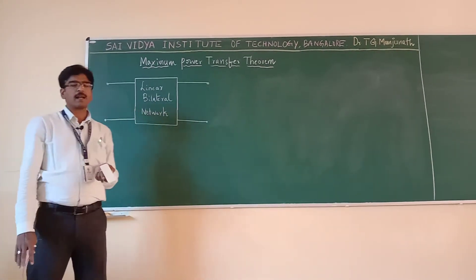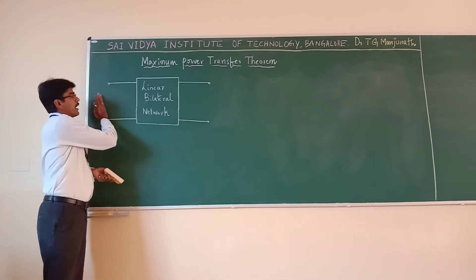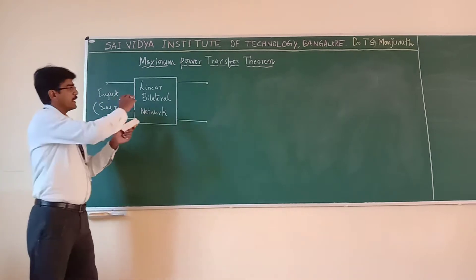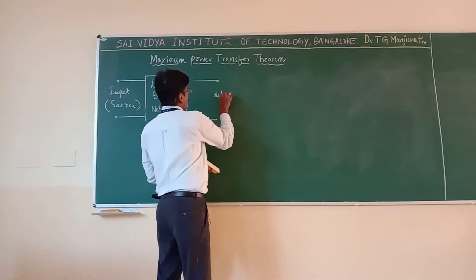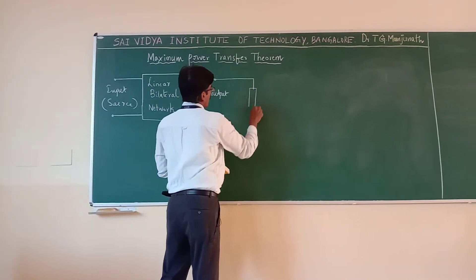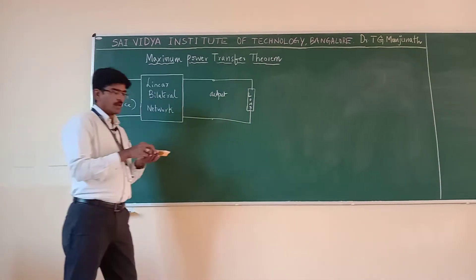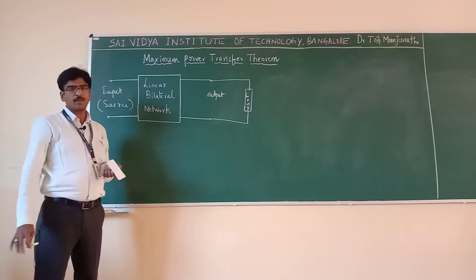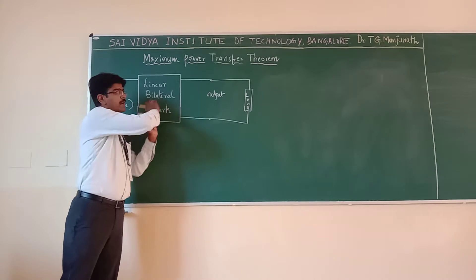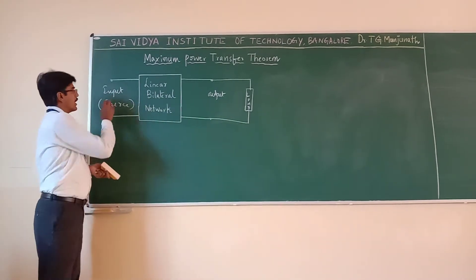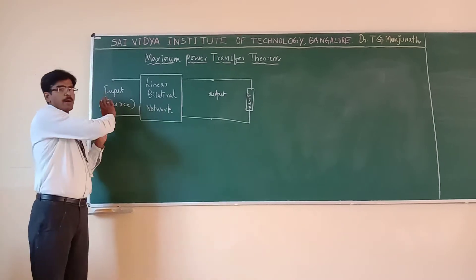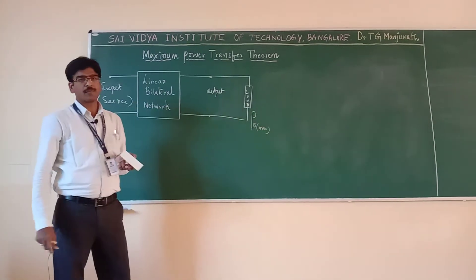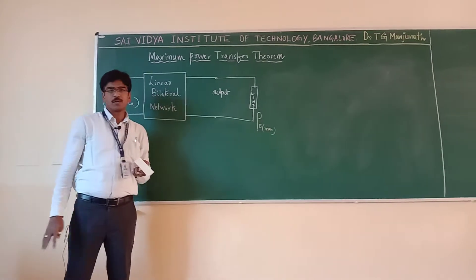Suppose if I consider an electrical network or an electronic system, you may be applying some input through some source and taking the output, which is connected to some load. So, our intention as a design engineer is to design the circuit such that maximum power should be transferred to the load from the source. We will be applying the input power and that power should reach the load.